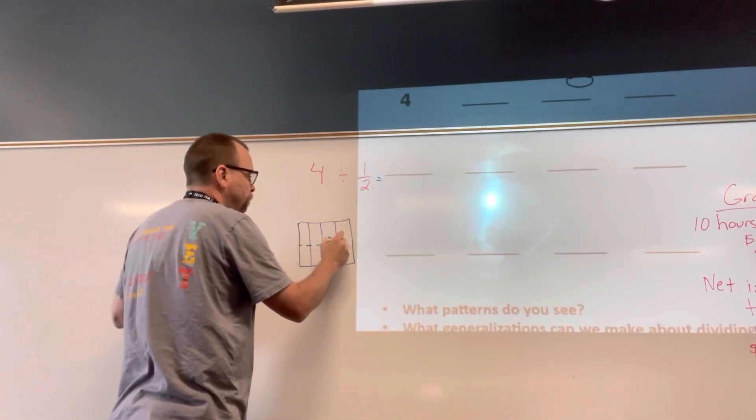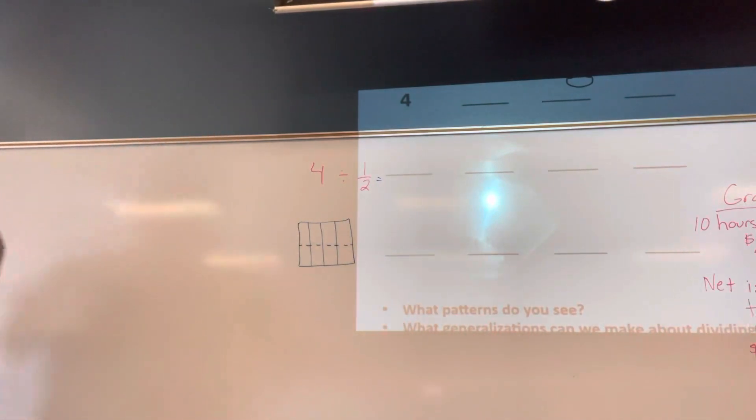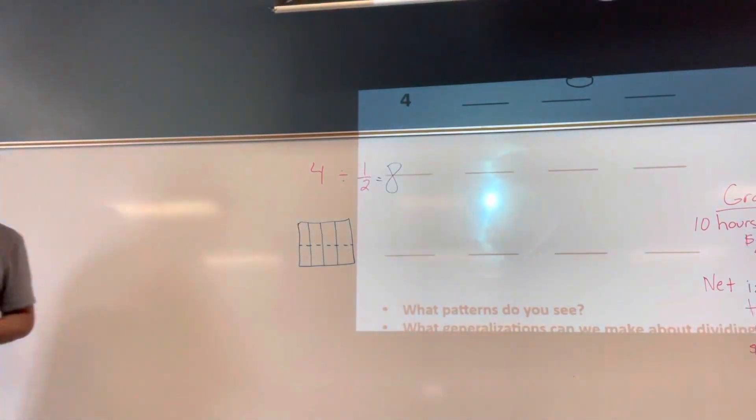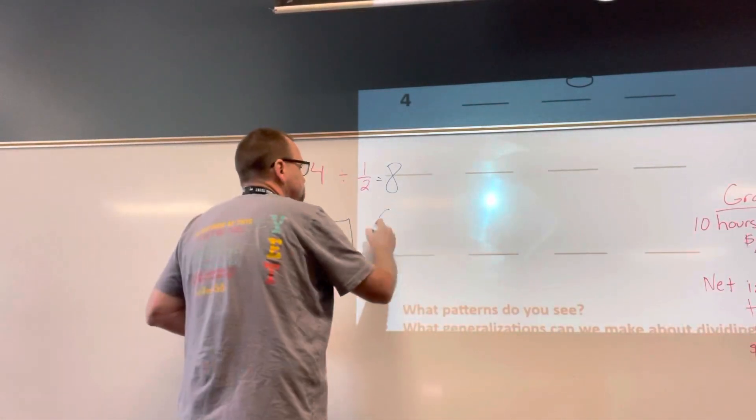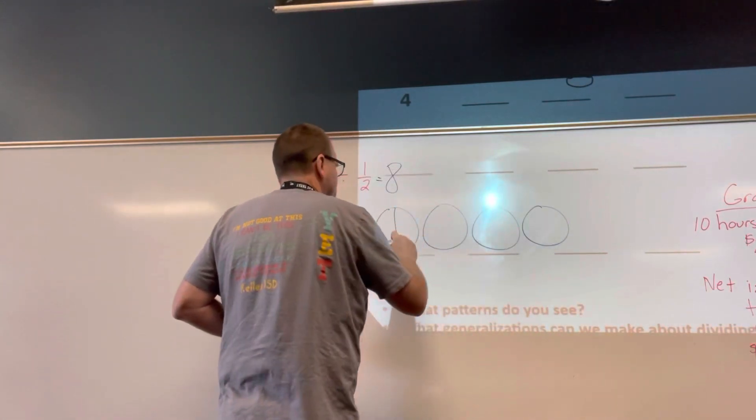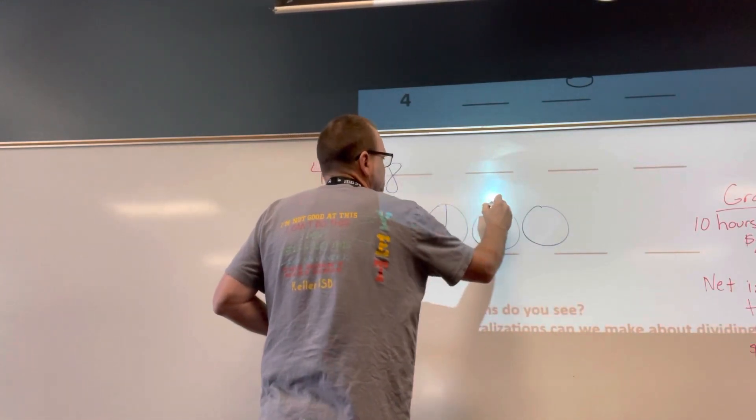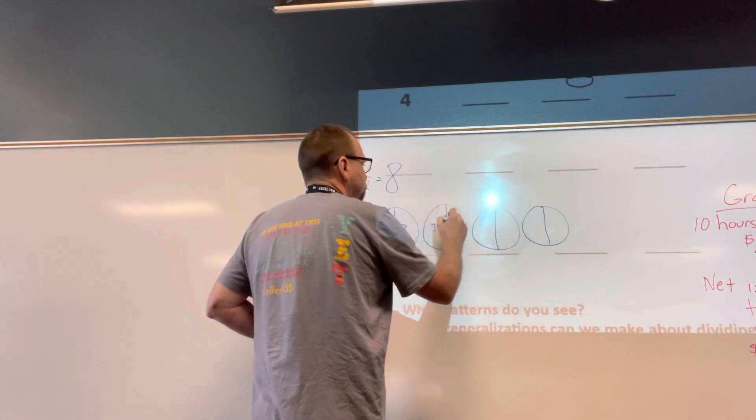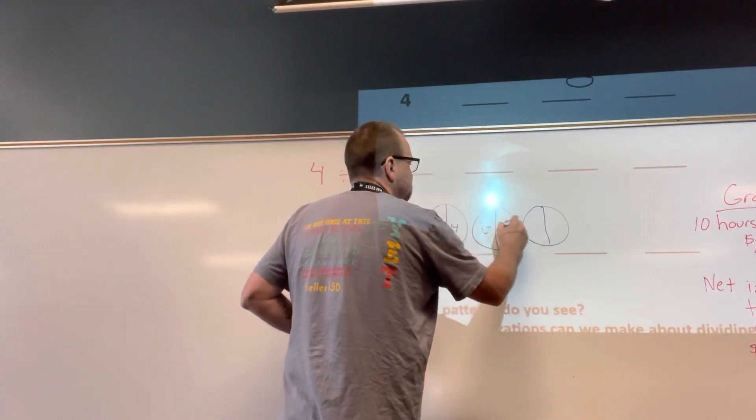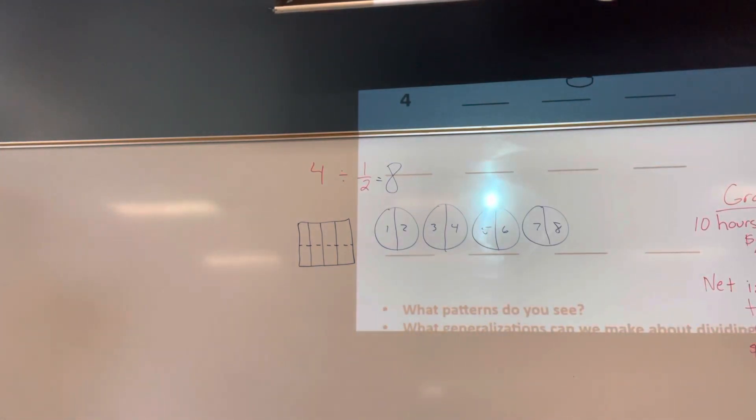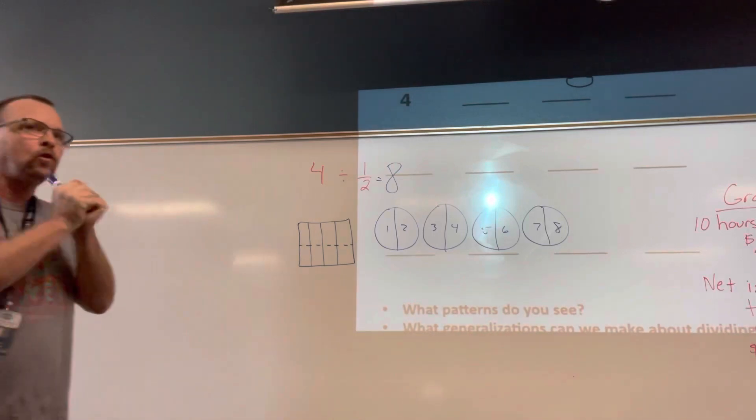Another way you could do it is, if we have four and we divide that by a half, we're asking how many halves are there in four? One, two, three, four, five, six, seven, eight. Remember, when you divide a whole number by a unit fraction, your answer will be a whole number.